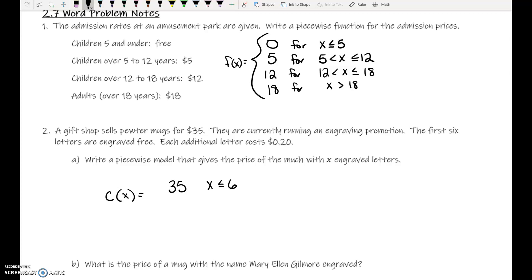What is the cost if we have to add more than six letters? You've got $35 plus 0.2 for 20 cents times the number of letters. But here's the weird thing, it's the number of letters more than six. So you want to do x minus six. I'm going to move this over here.